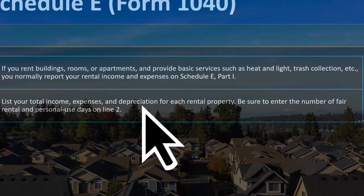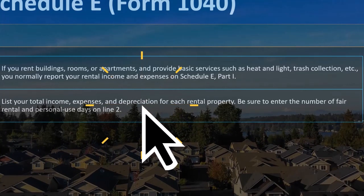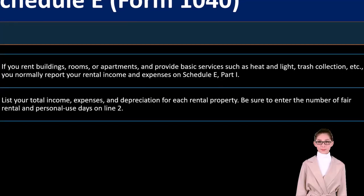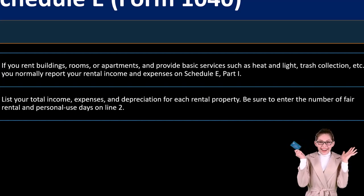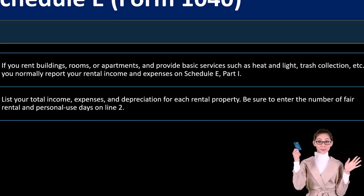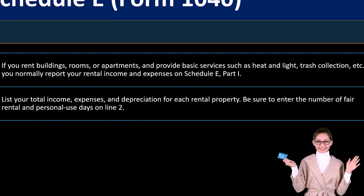List your total income, expenses, and depreciation for each rental property. You're going to break out each rental property rather than lump all rental properties together as if they were one business. Generally, you take each rental property and have a separate Schedule E — basically an income statement per property.